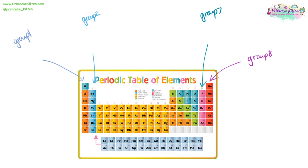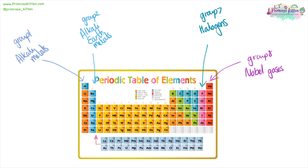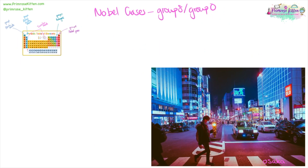This beautifully colored periodic table shows the many different groups and categories. Group one are also known as the alkali metals. Group two are the alkaline earth metals. Group seven are the halogens. Group eight, or group zero, on the far right-hand side, are the noble gases. The big chunk in the middle are the transition metals.